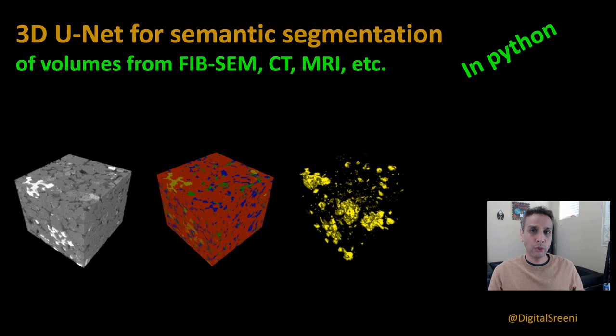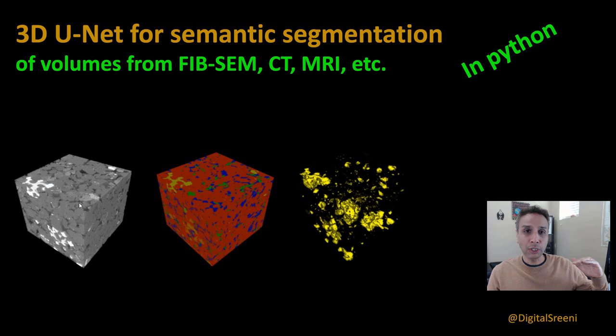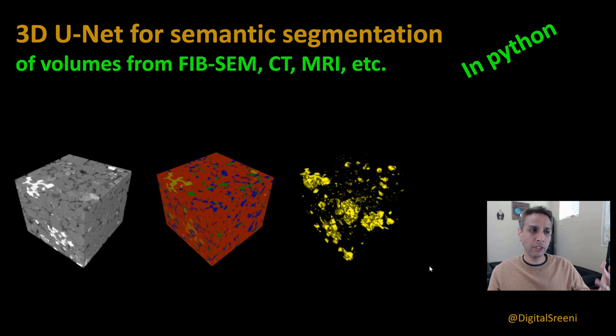I'm not going to show you just a binary segmentation — that's easy. I'm going to show you multi-class segmentation on the same dataset we have analyzed in the past, except in the past we did 2D slice at a time. Now let's take 3D sub-volumes at a time, train our model, and spit out the result as a segmented dataset. I'll show you both a 3D volume output and a 4D volume output — 3D plus each channel as separate channels so you can turn them on and off.